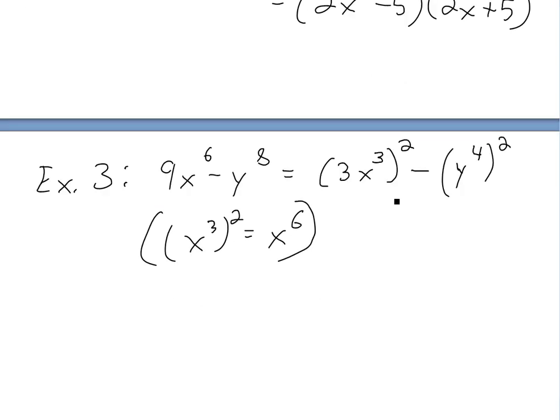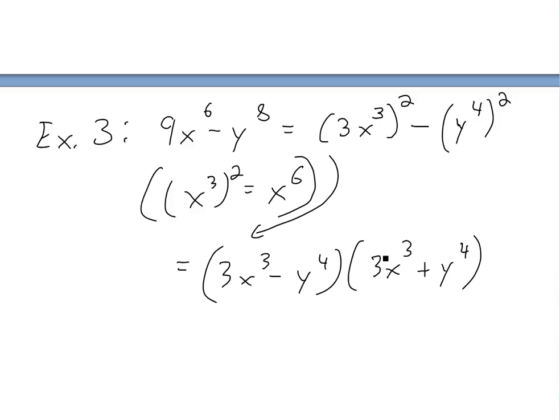So now we just plug it in exactly like before. Let's put an arrow there. We're going to get 3x cubed minus y to the 4 times 3x cubed plus y to the 4 here.